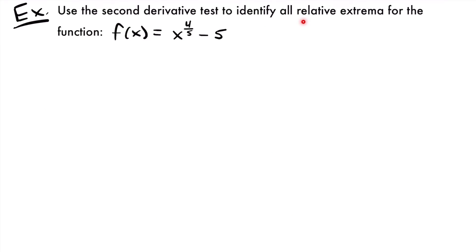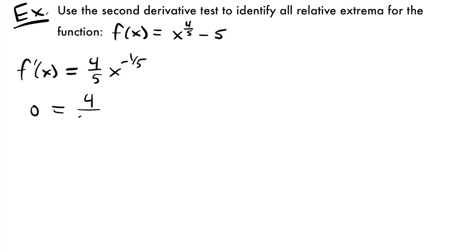Next, we use the second derivative test to identify all relative extrema for f(x) = x^(4/5) - 5. Taking the first derivative: f'(x) = (4/5)x^(-1/5). The derivative of -5 is 0. Setting this equal to zero: 0 = 4 / (5x^(1/5)). There is no value of x that makes this true — 4 divided by anything is never 0. So we can't find critical values where the derivative equals zero.